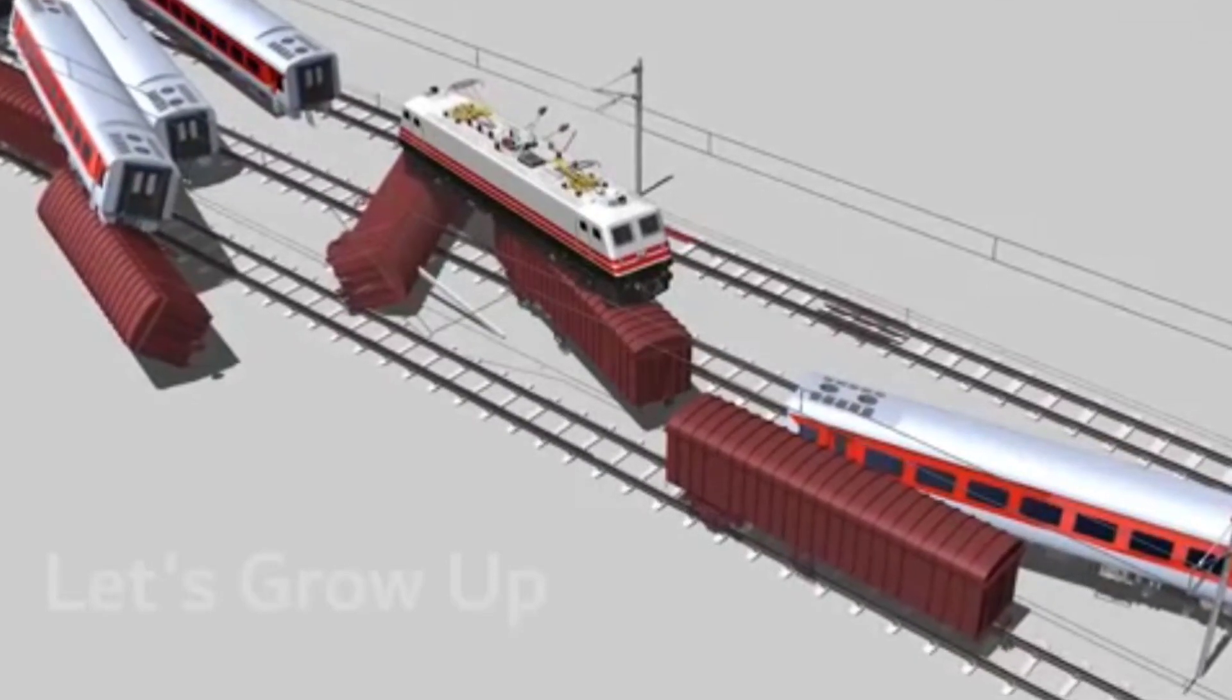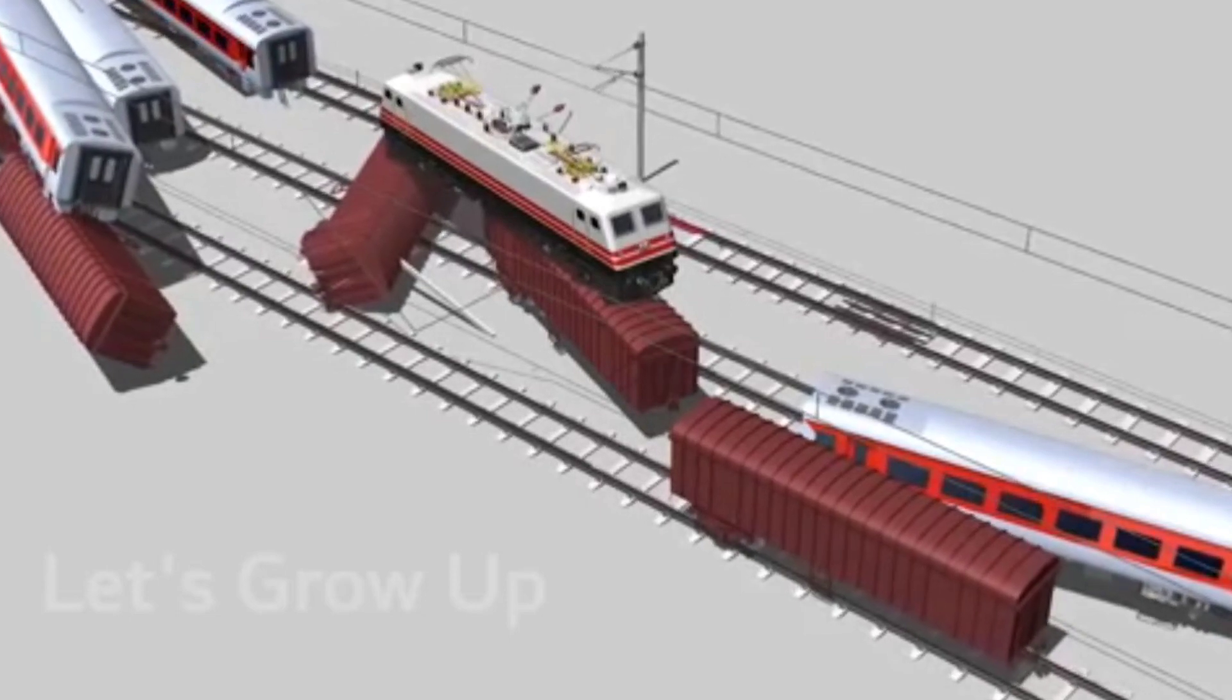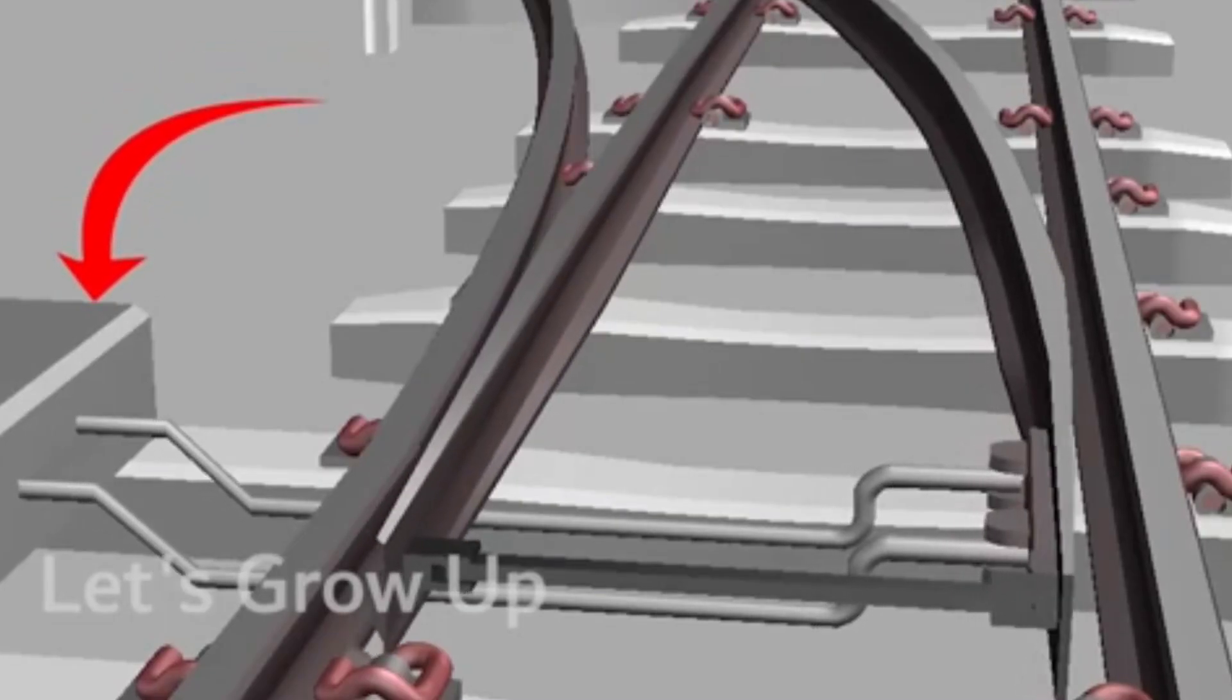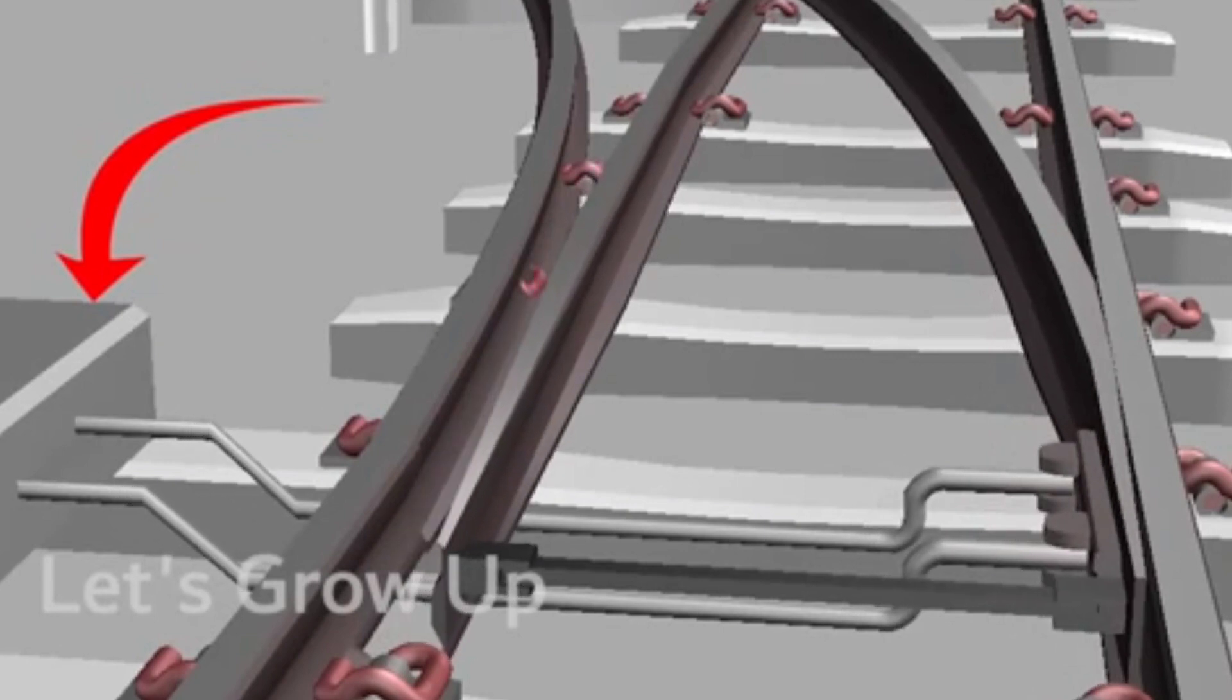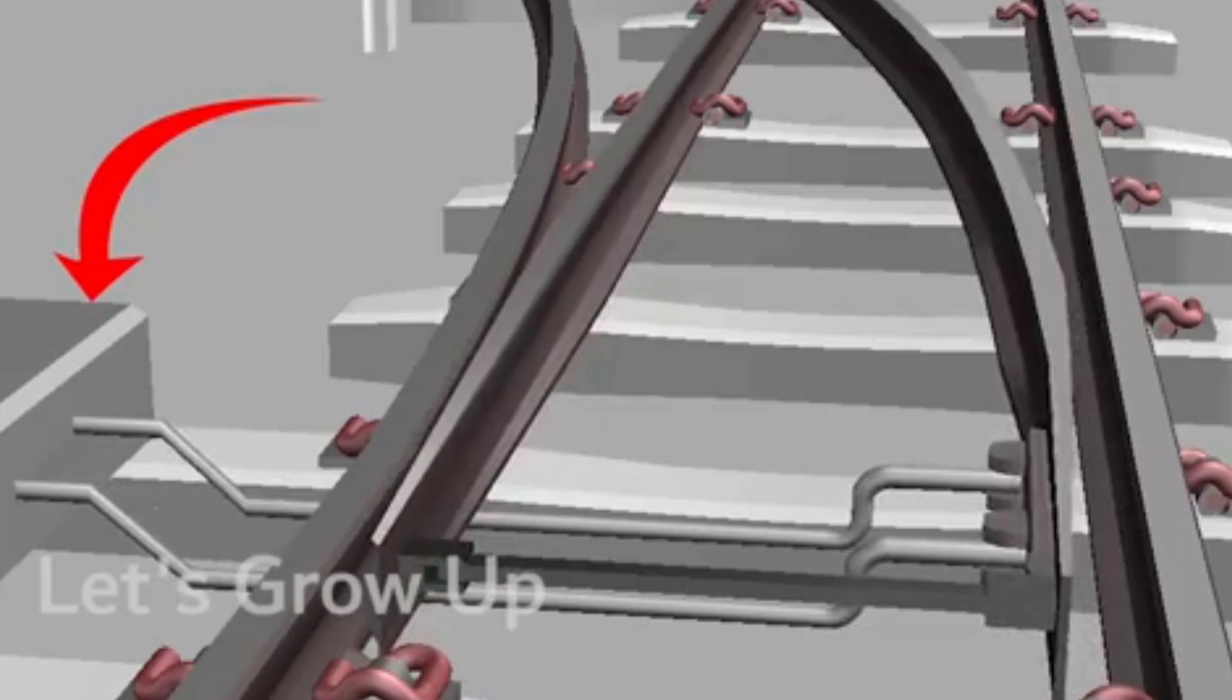After coming out of the primary investigation of the Coromandel Express accident, they identified the point machine as the main reason behind this incident. So then, what is this point machine?